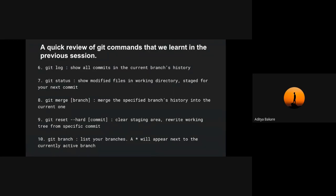Then comes git merge with a branch name. If you make a development branch and want to merge those new commits into your main branch, git merge comes to the rescue — it merges those new changes to your main branch. Then git reset --hard with a commit hash. If you mess up or break some code, you can revisit an old commit where the code was working using git reset --hard followed by the commit hash.